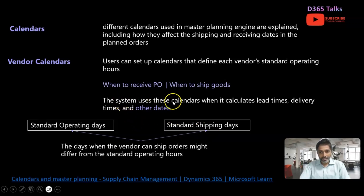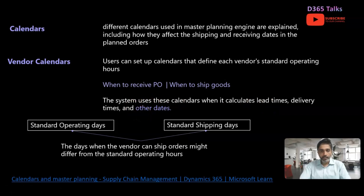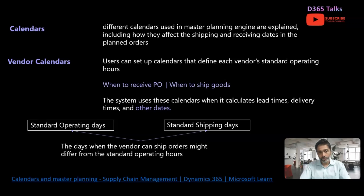The system uses these calendars when it calculates lead time, delivery time, and other dates. The system primarily uses these calendars along with the safety margins discussed in previous episodes to arrive at the lead times based on the vendor's calendars. We will also see what hierarchy is followed by the end of this episode, which is considered as priority when the master planning engine runs.